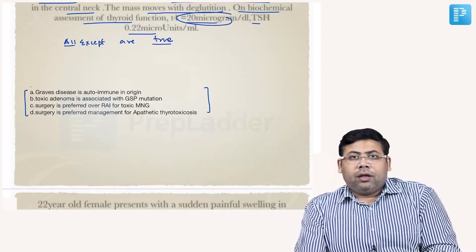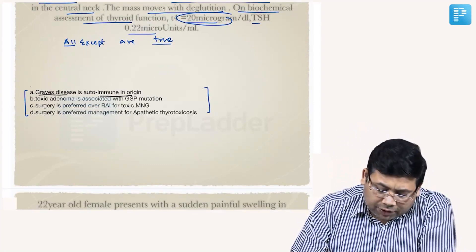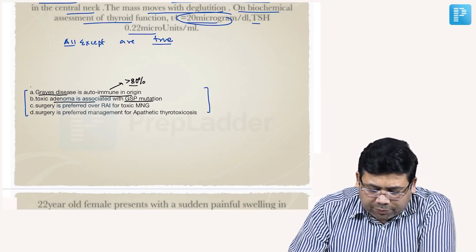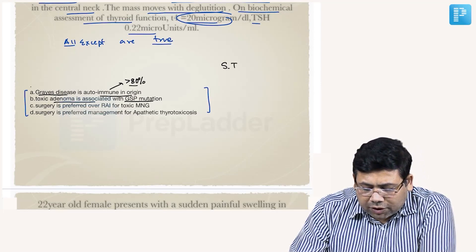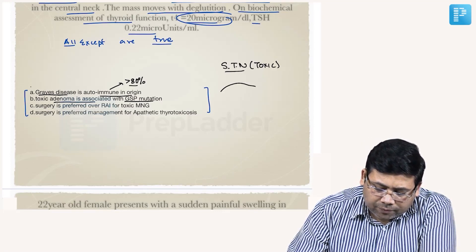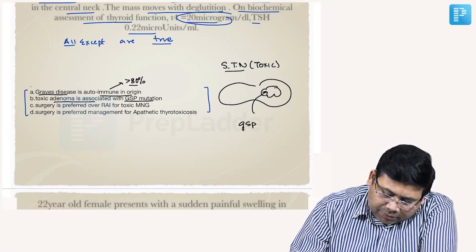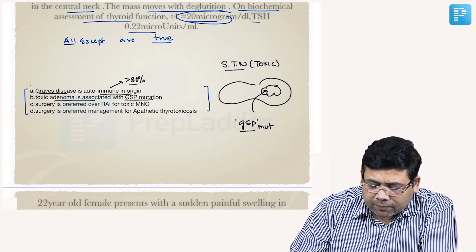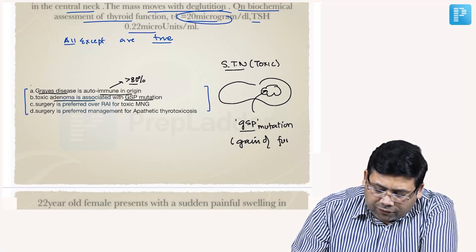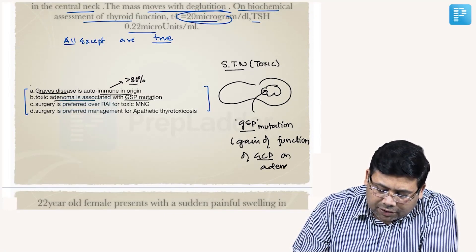Looking at the options: Graves' disease is of autoimmune origin — yes, in more than 80% of cases it is autoimmune. Toxic Adenoma — that is Solitary Toxic Nodule — is associated with G-stimulatory protein mutation. This nodule is auto-functioning because there is a gain-of-function mutation of the G-coupled protein on the adenoma, leading to uncontrolled increase in size.